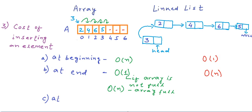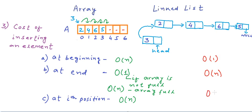Third case — inserting in the middle at some i-th position: for arrays, we must shift elements, and in the average case shift about n/2 elements, so complexity is O(n). For a linked list, even though there is no shifting, we must traverse to that position, and in the average case time taken is also proportional to n — O(n). So both are equal here.